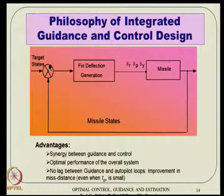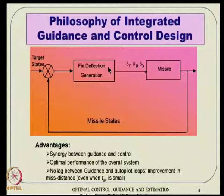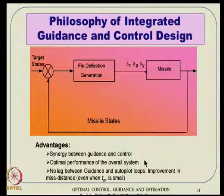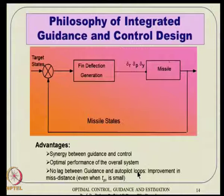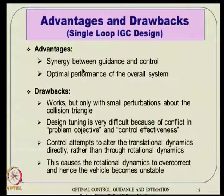For these reasons, people have thought about putting everything together in an IGC sense — just one loop. All information is available: target information, missile information — simply do the math and generate fin deflection directly. This leads to: synergy between guidance and control, optimal performance of the overall system since there is no point mass equation anymore, and essentially no lag between guidance and autopilot loops, leading to expected improvement in miss distance. However, in our own observation, it works only with small perturbation about the collision triangle; otherwise tuning becomes quite difficult.